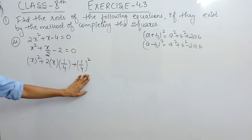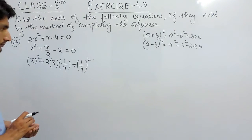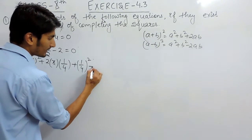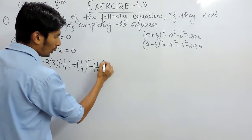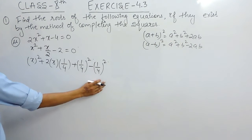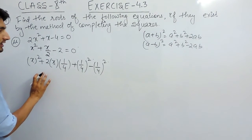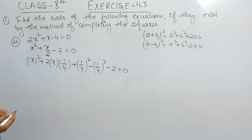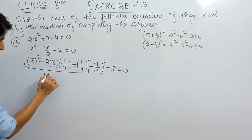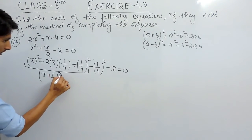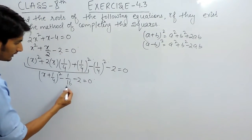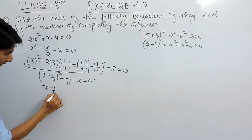Now we have a² + b² + 2ab. We can't only add a term — we have to subtract that same term also to keep the value of the expression unchanged. So minus 2 will remain as it is. This is a² + b² + 2ab, so in place of this we can write (a + b)², and the remaining will be 1 upon 16 minus 2 equals to 0.